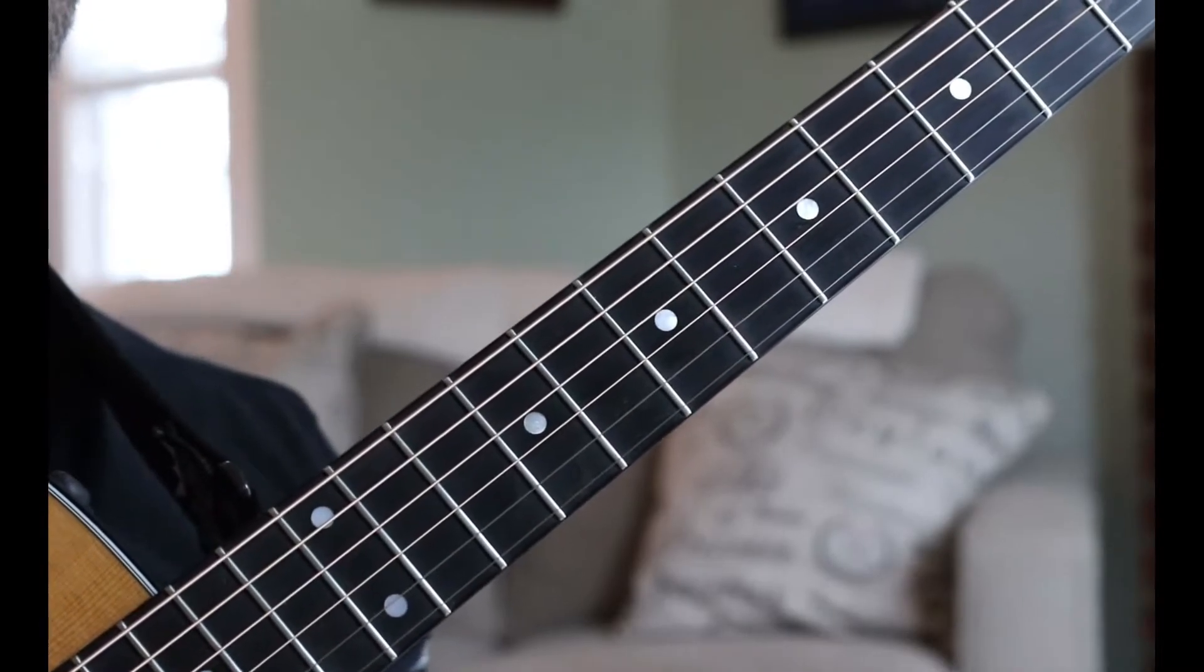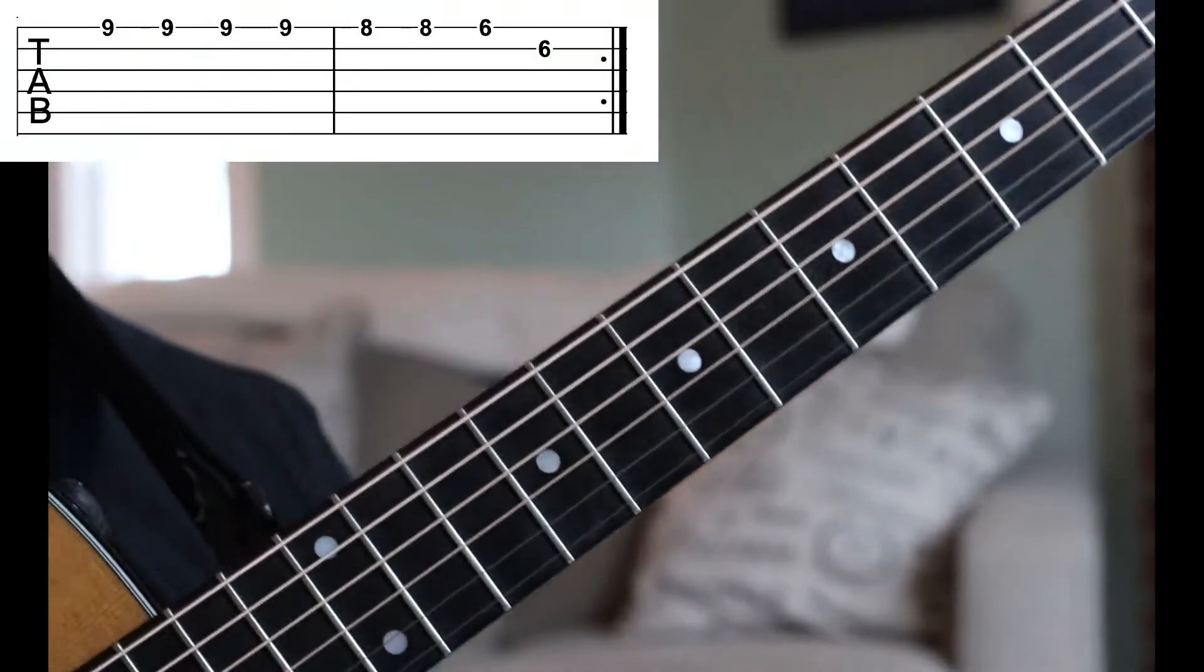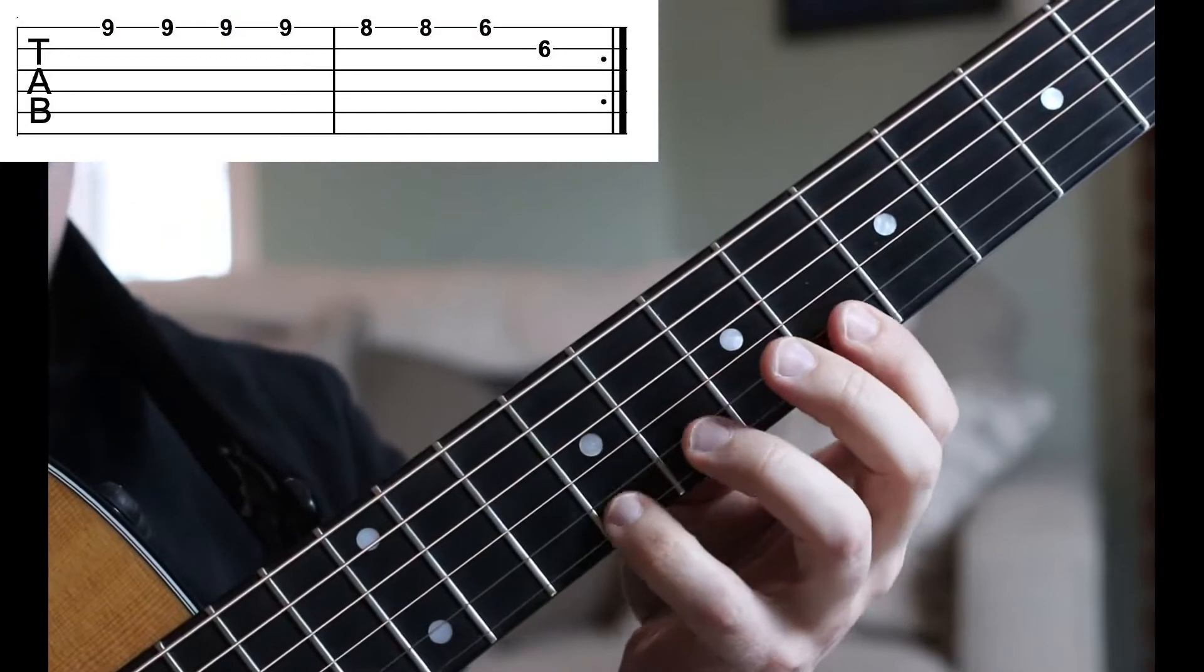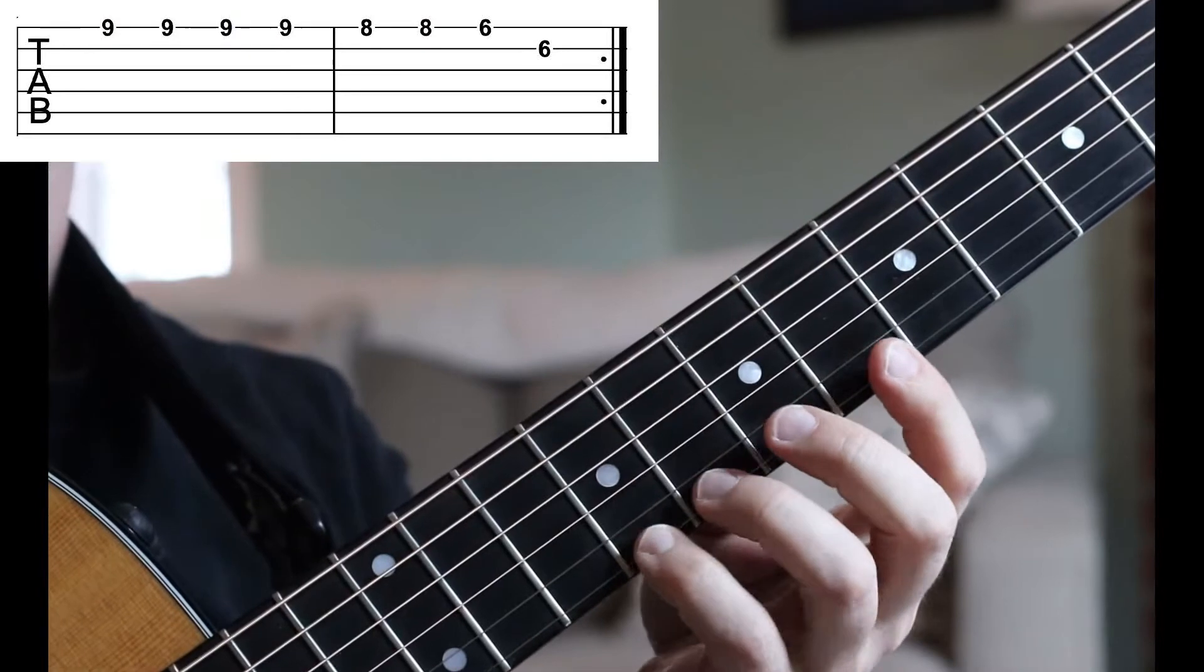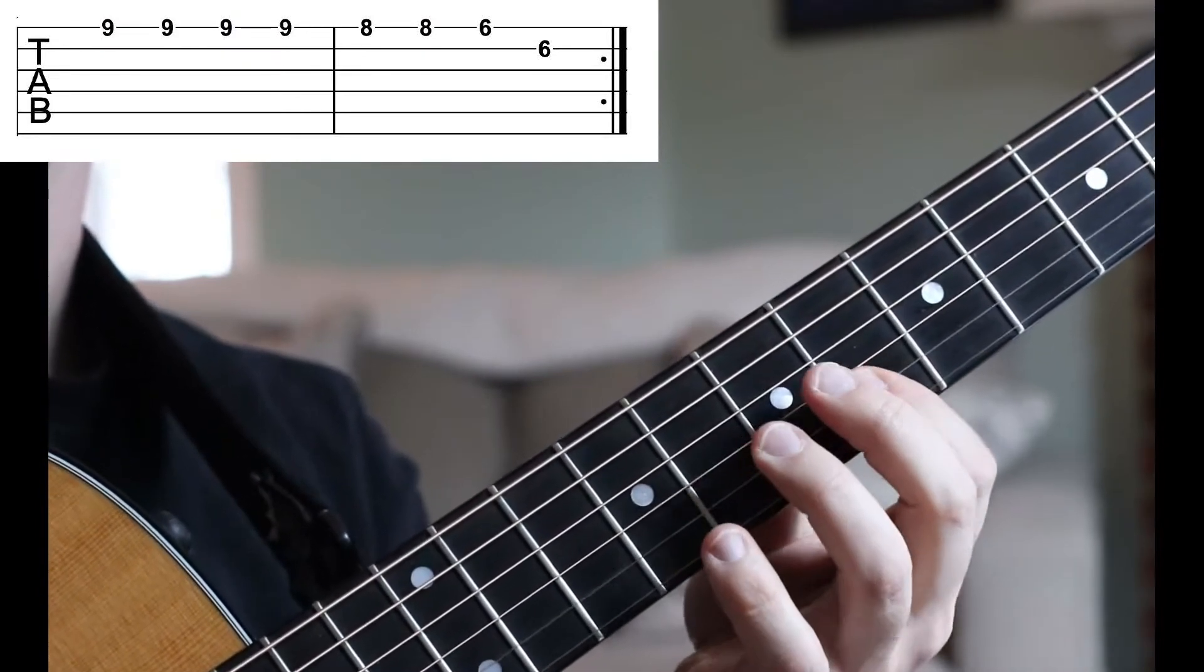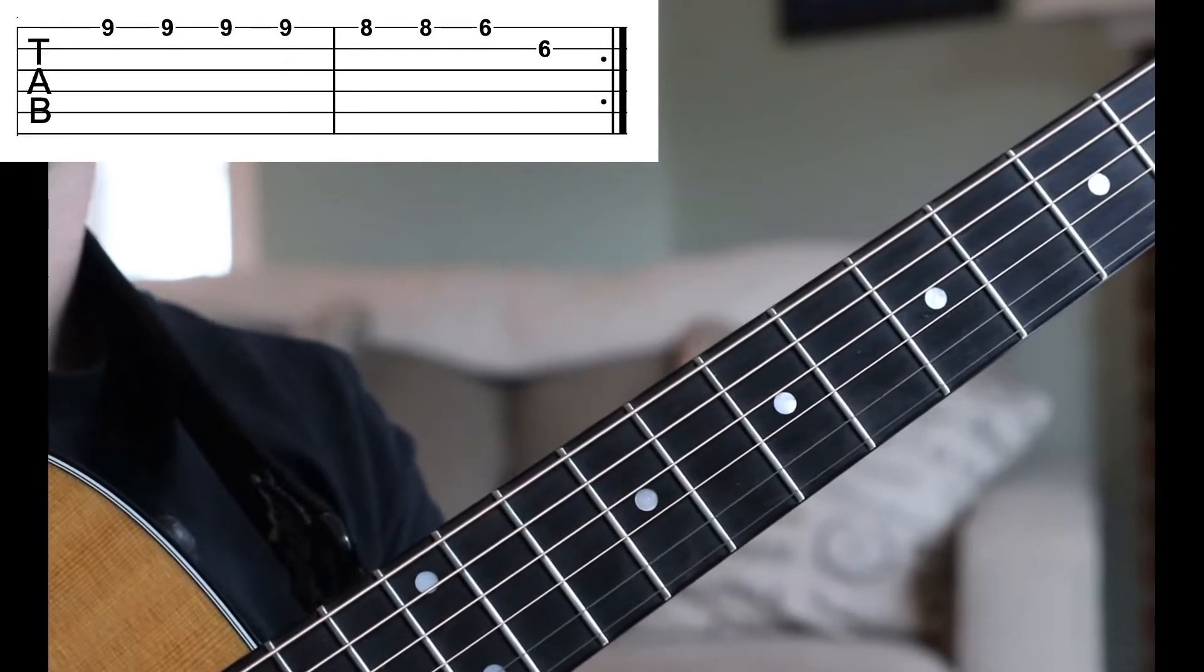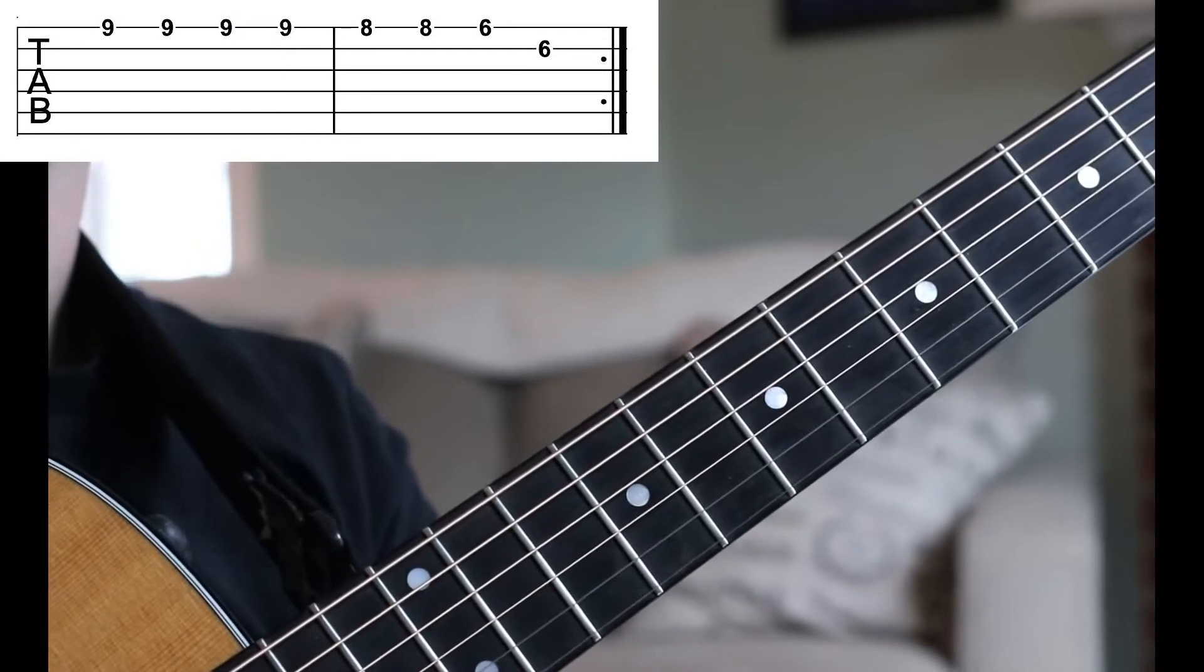Okay, here we are. For the first tab that we're going to be checking out today, we're going to be looking at Dark Horse by Katy Perry. Now this is a great easy line for you and your students to learn right off the bat. Now as you can see from this graphic, we start off at fret 9 on the high E string. That's the string closest to the ground. But in guitar tablature, remember that's the highest line.